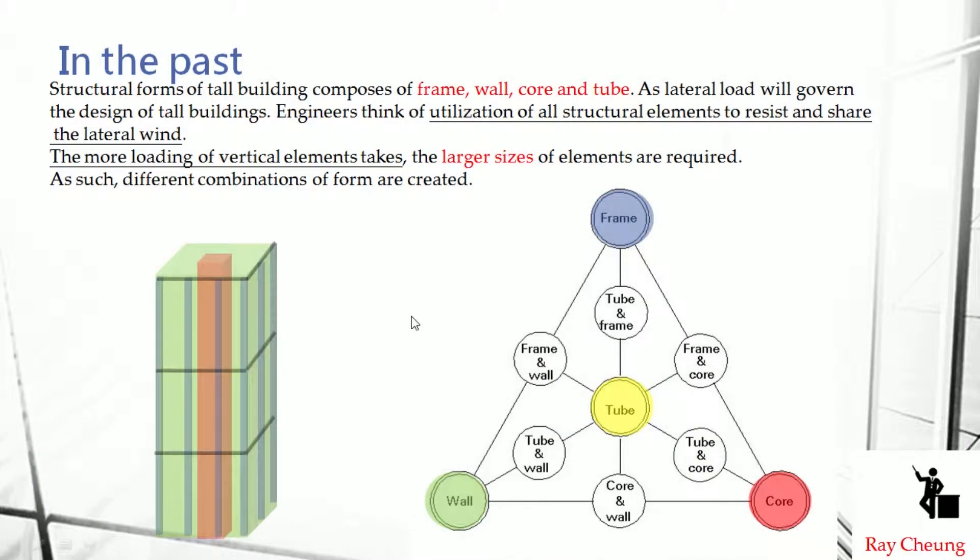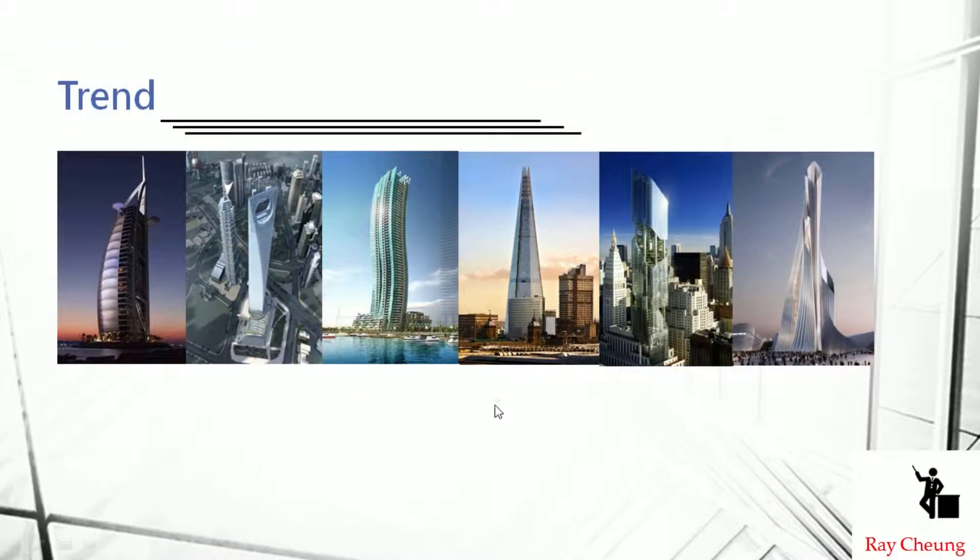In the past, the structure normally will have a different combination of structures. For example, they will combine the wall, core, tube, and frame together to take the lateral wind load. And once the size becomes taller and taller, the size of the element will become very large. That's why nowadays designers and architects try to think about different forms. They will not only think about how tall it is, but what are the different forms - sometimes using twisting forms, sometimes they take out the core. You can see there's different combinations.